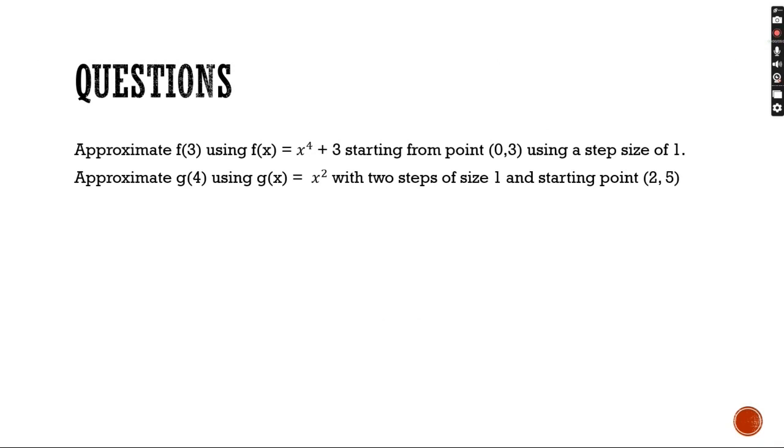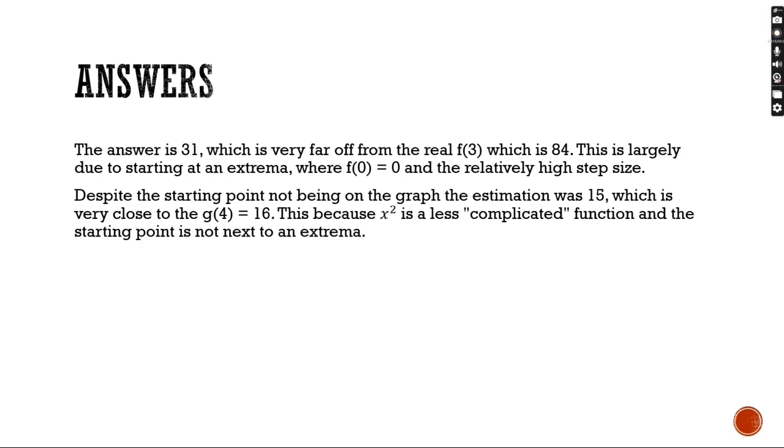We now have two problems regarding Euler's method. The first one is, approximate f of 3 using the function f of x equals x to the 4th power plus 3, starting from the point 0, 3, and using a step size of 1. Going through the Euler's method process, where you calculate the derivative and the tangent line, using it to approximate each step size, you would get the answer of 31, which is very far off from the real value of f of 3, which is 84. This is largely due to starting at an extrema, where f of 0 equals 0, and having a relatively high step size.